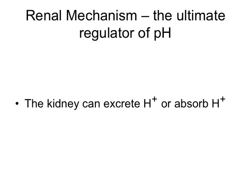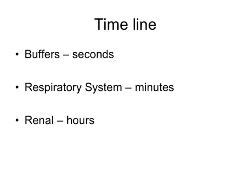All three of these mechanisms are used in the body, and the timeline is very important — I'll expect you to know this slide. The buffers — the chemical systems — react in seconds or less; this is nearly instantaneous. The respiratory system acts in minutes; you can hyperventilate or hypoventilate to adjust your pH. The renal system acts in hours. So if you knock the body out of homeostasis, these salvage mechanisms come into play in that order.